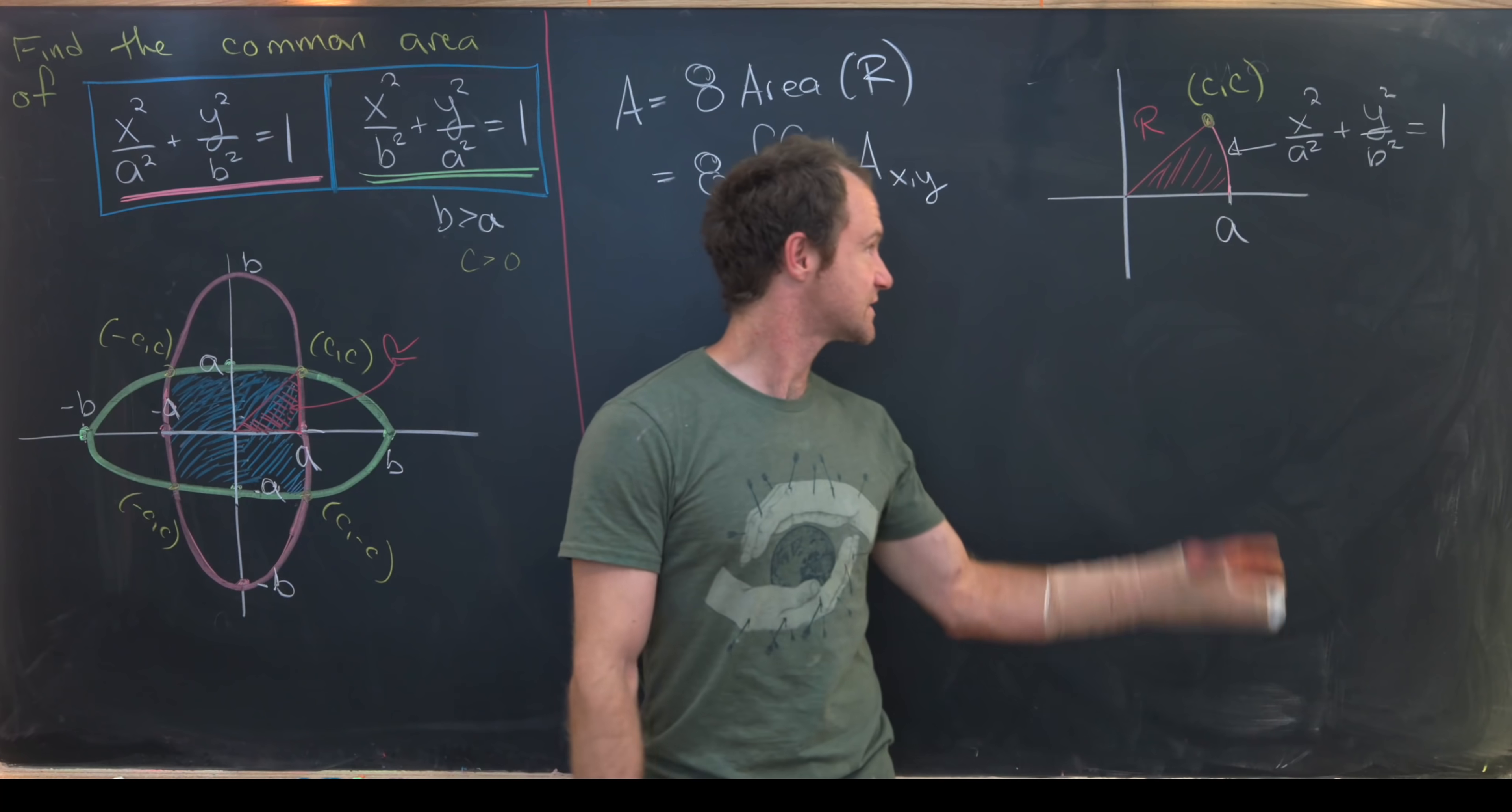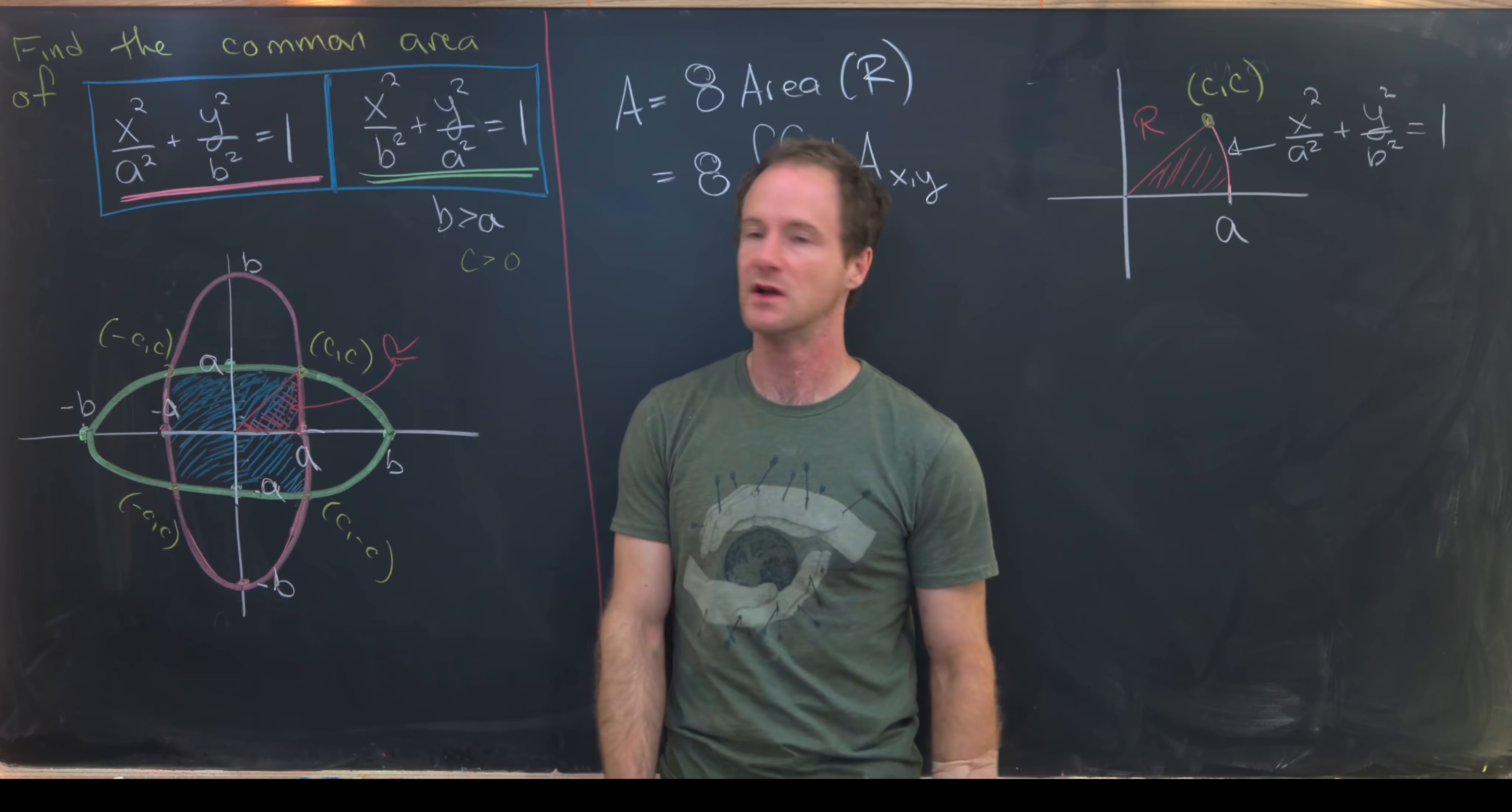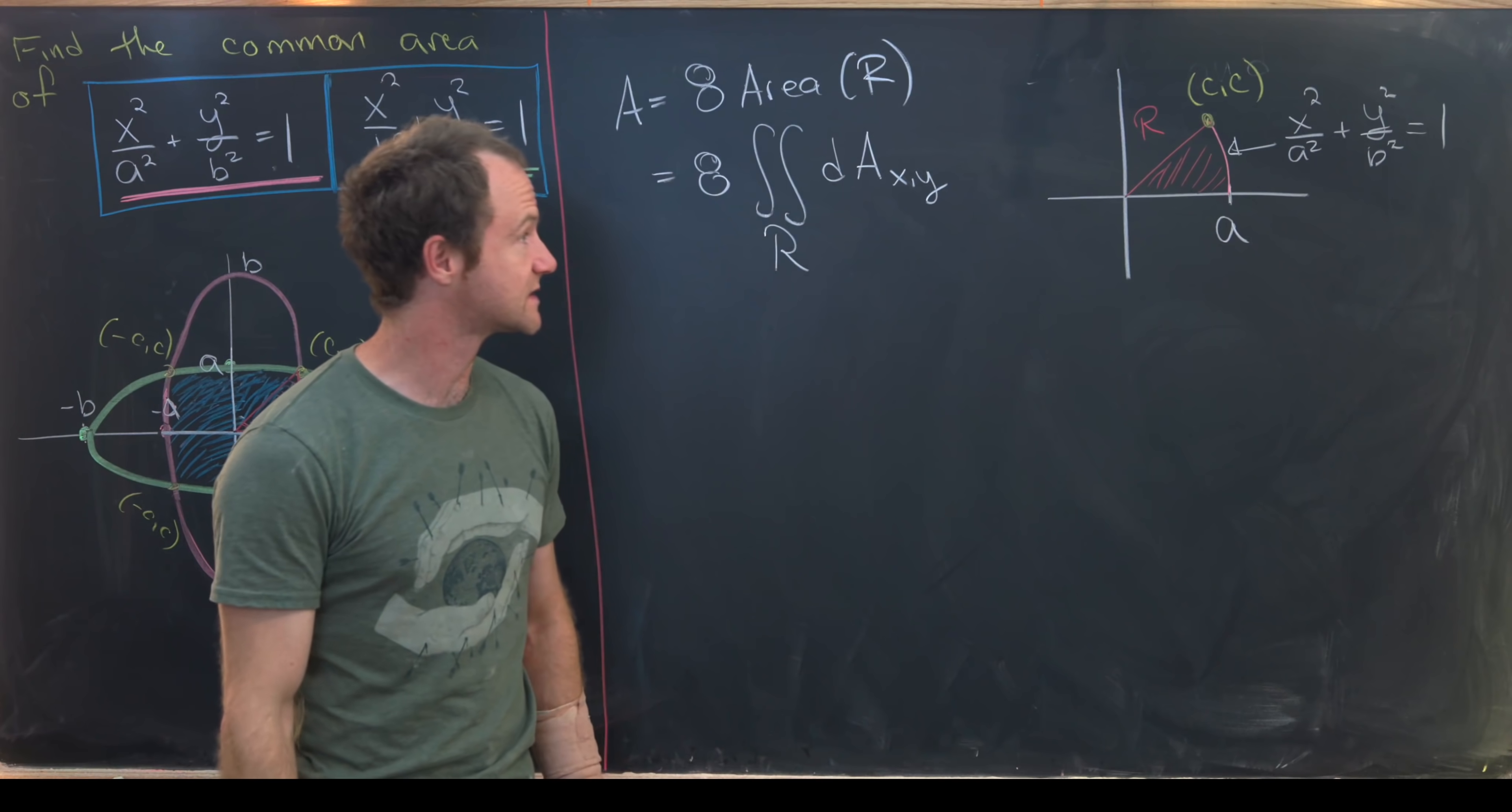We've honed in on the region that we need to find the area of. Notice this region only depends on one of these ellipses, and we're only able to do that because these ellipses are so related to each other. Notice if we switch x and y, we switch this ellipse into this ellipse. That's just one of the symmetries that's built into this.